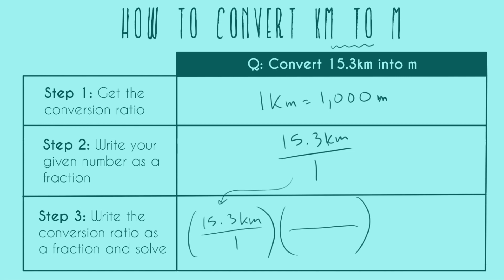And so to do that, since we already have kilometers in the numerator, we really need kilometers in the denominator so we can cancel out, which means our left hand side, one kilometer, is what goes down here. And that leaves our right hand side, a thousand meters, to go up here.